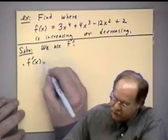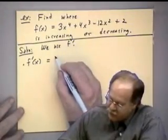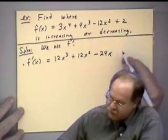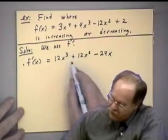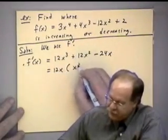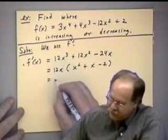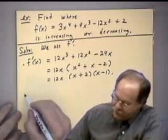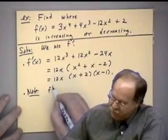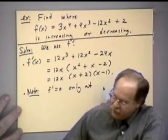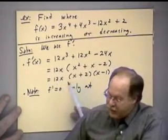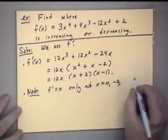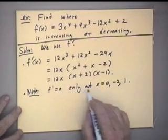We're going to use f′ to answer our question because of the theorem we just had. First, we calculate the derivative. f′(x) = 12x³ + 12x² − 24x. I notice I can factor out 12x, giving 12x(x² + x − 2). I can factor further: 12x(x + 2)(x − 1). Note that f′ equals zero only at x = 0, x = −2, and x = 1.